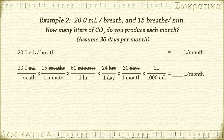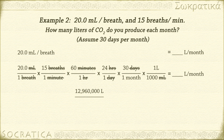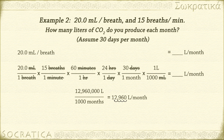Multiply the top all the way across and multiply the bottom all the way across. Don't forget to check your significant figures — there was a measurement of 3 significant figures in the problem: 20.0 milliliters. So we'll state our answer with 3 significant figures. 12,960,000 divided by 1,000 equals 12,960. Now let's put this into scientific notation so we can easily see 3 significant figures. Count over 1, 2, 3, 4 decimal places: 1.296 × 10⁴ liters per month. Round to 3 significant figures: 1.30 × 10⁴ liters per month.